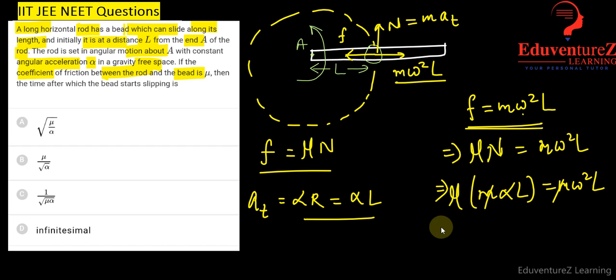M is cancelled out, L is also cancelled out, and mu alpha becomes equal to omega square.